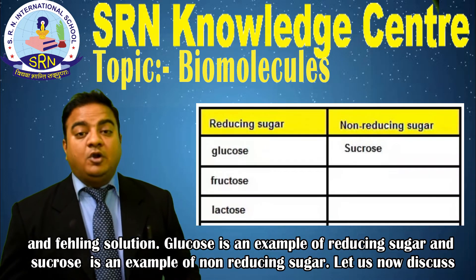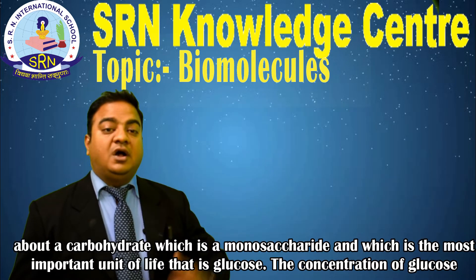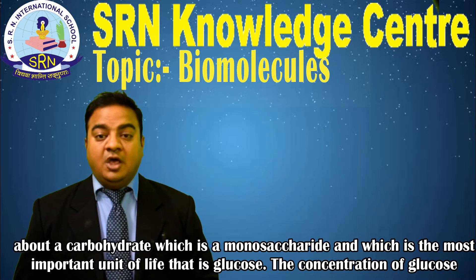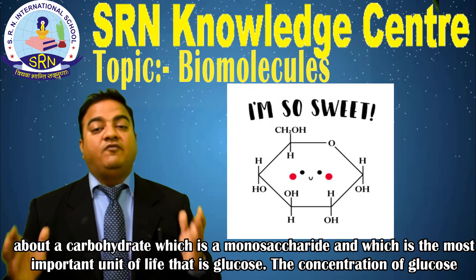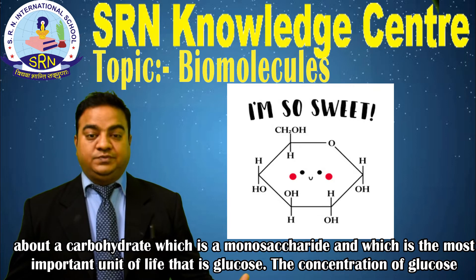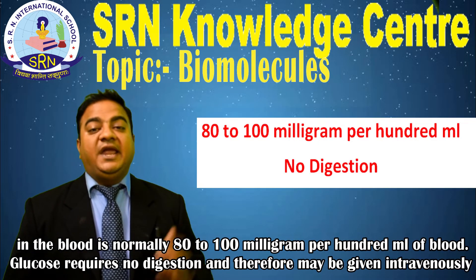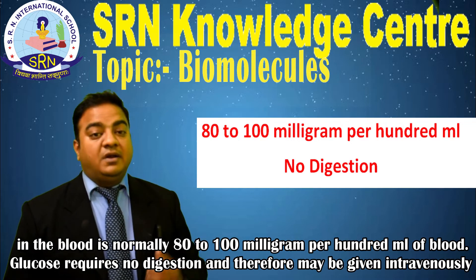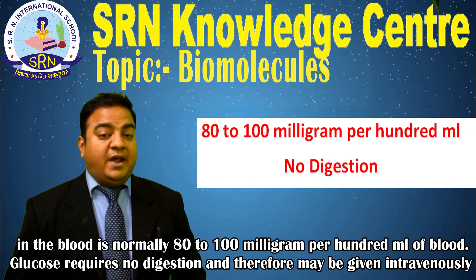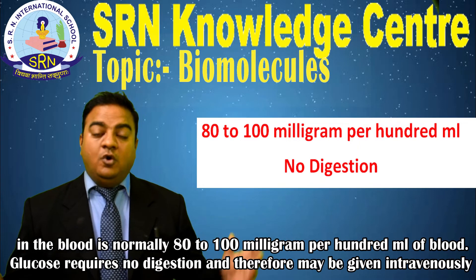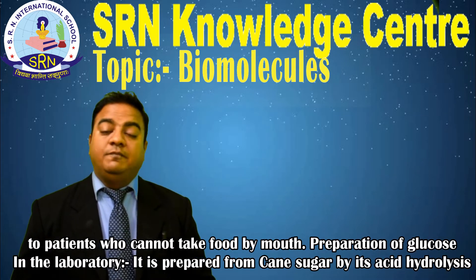Glucose is an example of a reducing sugar, and sucrose is an example of a non-reducing sugar. Let us now discuss glucose, a monosaccharide and the most important unit of life. The concentration of glucose in the blood is normally 80 to 100 mg per 100 ml of blood. Glucose requires no digestion and therefore may be given intravenously to a patient who cannot take food by mouth.